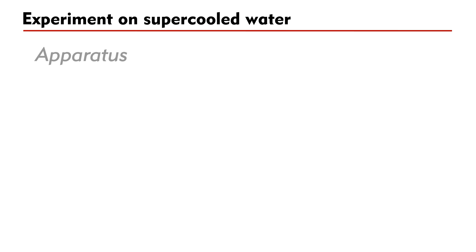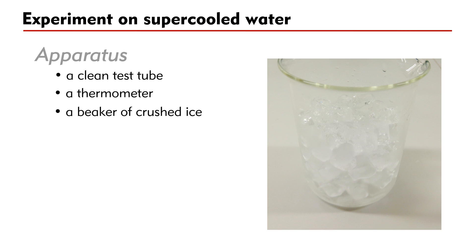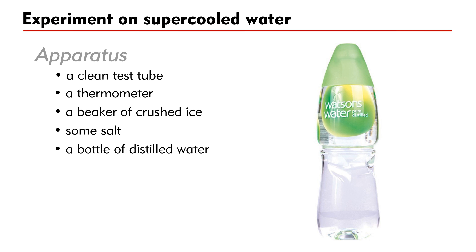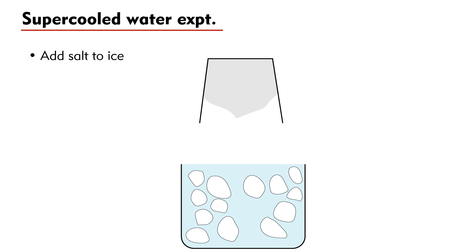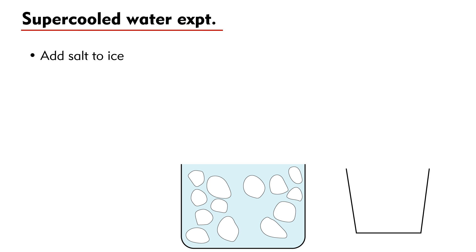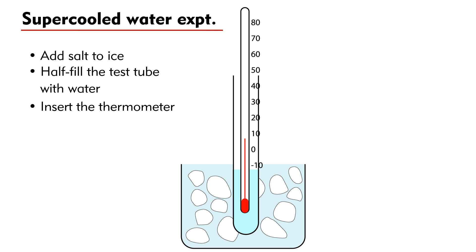We are going to study supercooled water experimentally and the latent heat involved. The apparatus used in this experiment include a clean test tube, a thermometer, a beaker of crushed ice, some salt, and a bottle of distilled water. Add the salt into the beaker of crushed ice to produce a sub-zero mixture. The temperature of this mixture can be as low as minus 20 degrees Celsius. Half-fill the test tube with distilled water, insert the thermometer into the test tube, then insert the test tube into the mixture. Leave the test tube alone without disturbing it and watch the temperature fall.